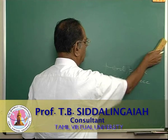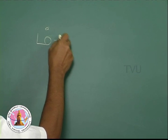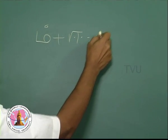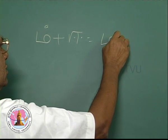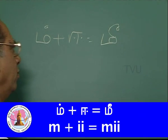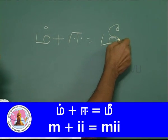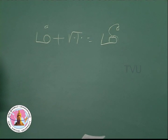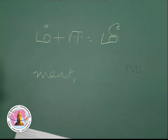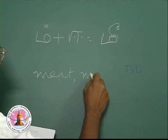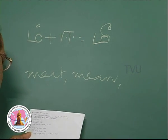Next, you have a nasal that is m plus ee, this is mee. The marker is a hook which is rounded off in the middle. This is mee as you have in meet, mean and mead.